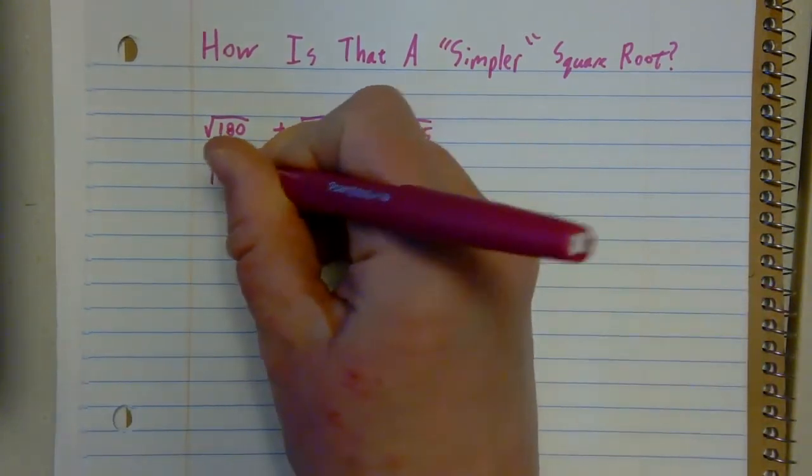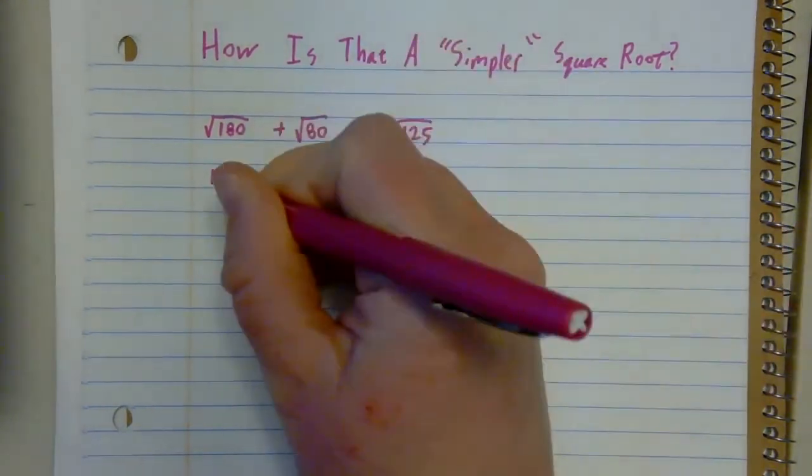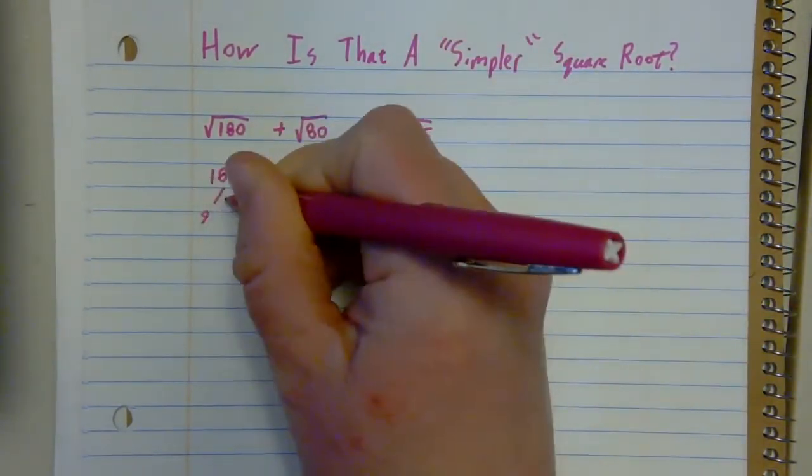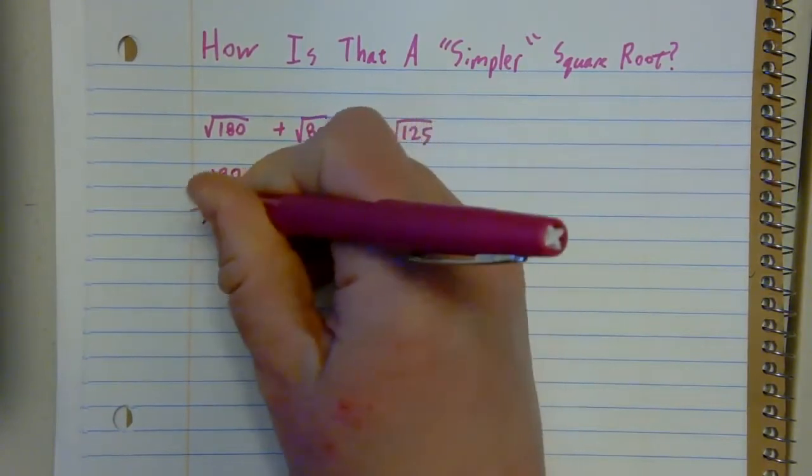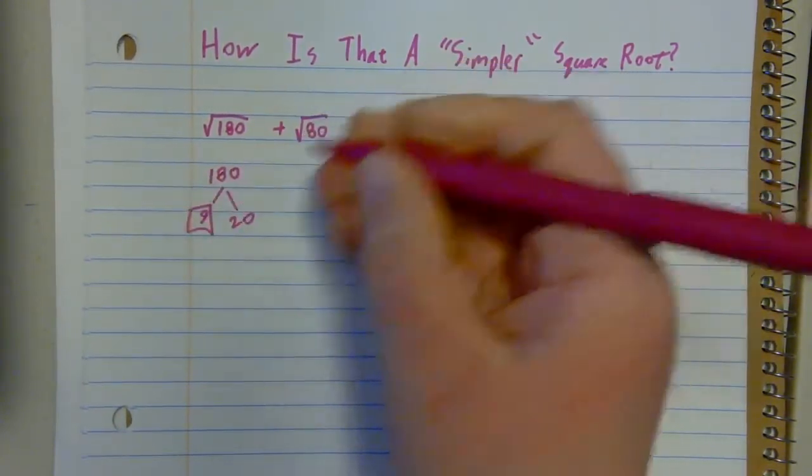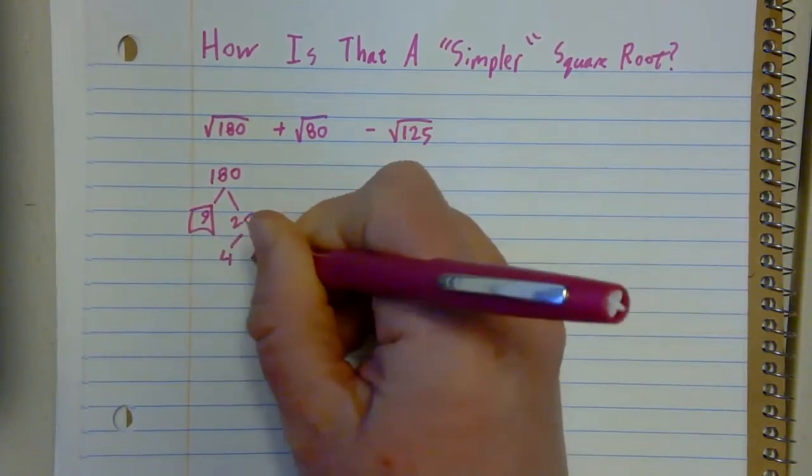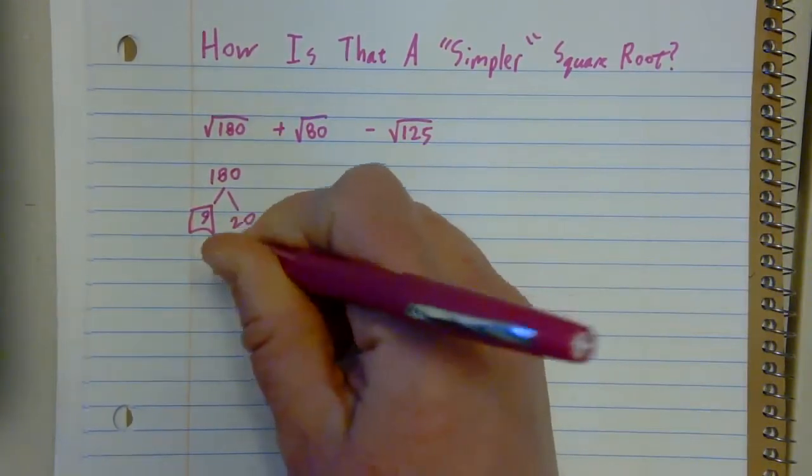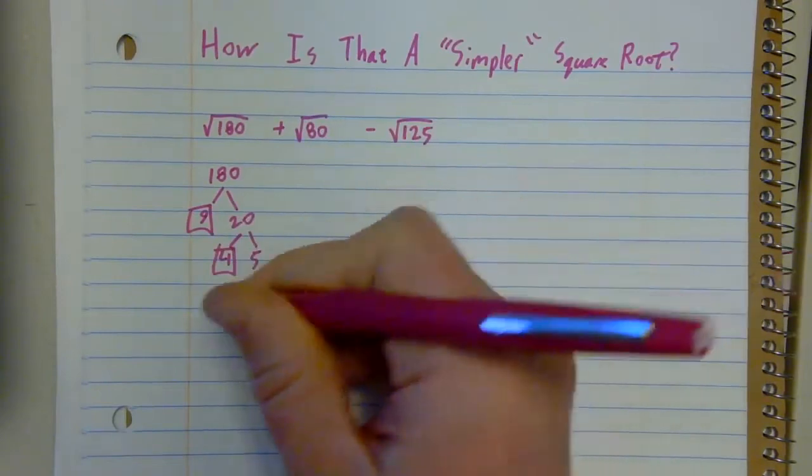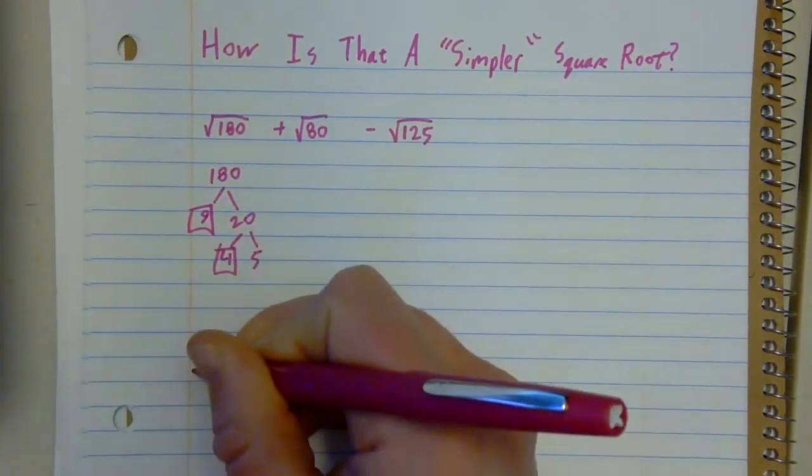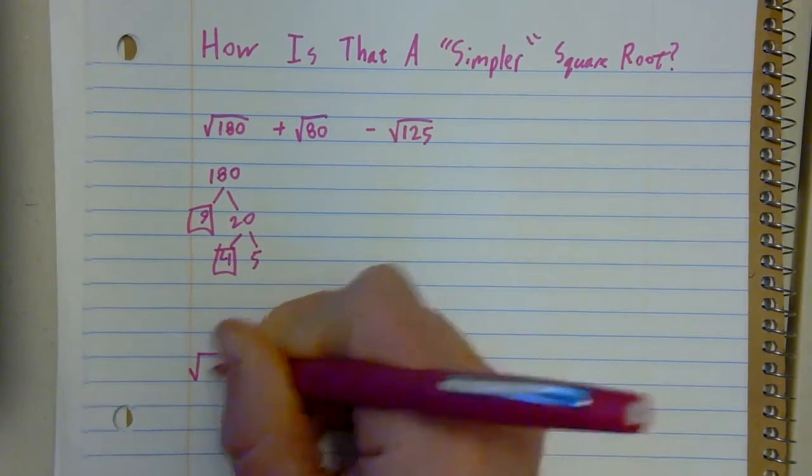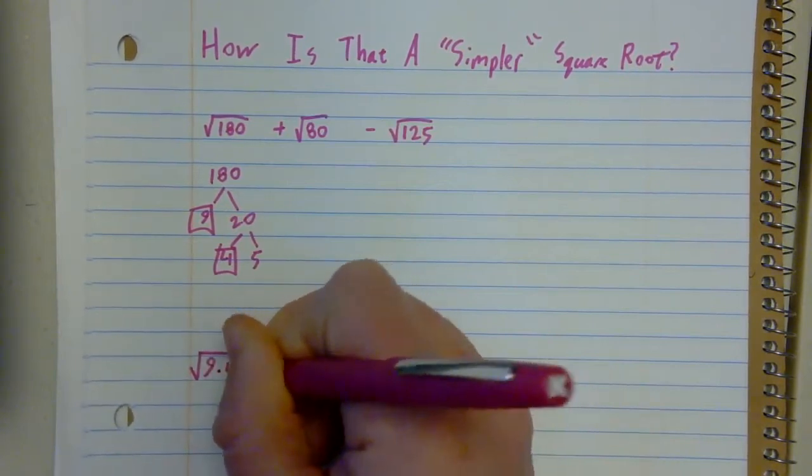So 180 factors into 9 times 20. 9 is a perfect square. 20 has a 4 in it and a 5 in it. 4 is a perfect square. 5 is prime. This is going to factor as 9 times 4 times 5.